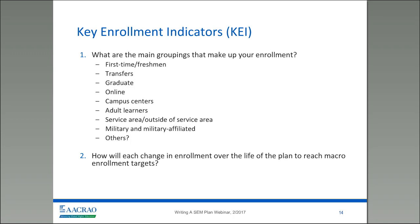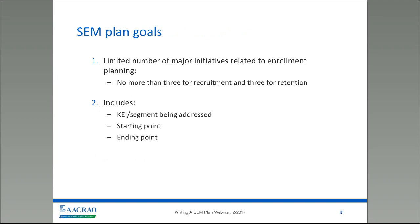So now we're starting to see how all this research, data, and number crunching of assessing your enrollment starts to paint a picture for you, your faculty, and your administrators in thinking about starting to set some SEM plan goals. Moving from key enrollment indicators onto SEM plan goals, you really want to try and limit the number of those. These are still fairly high-level goals — not the detail of the work — but two, three, no more than three or four goals under each of your key enrollment indicator areas. So if you've got something addressing recruitment or retention, maybe three goals for each. Make sure your target segments are addressed in those goals.